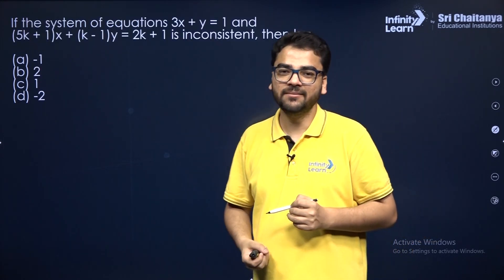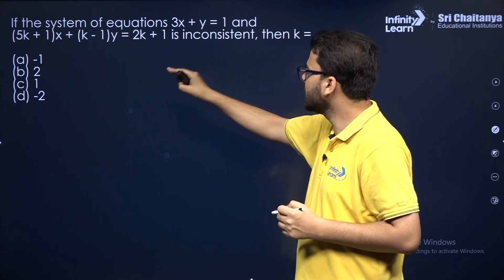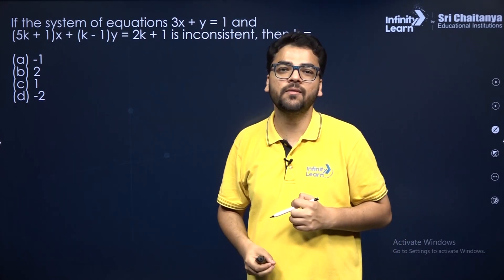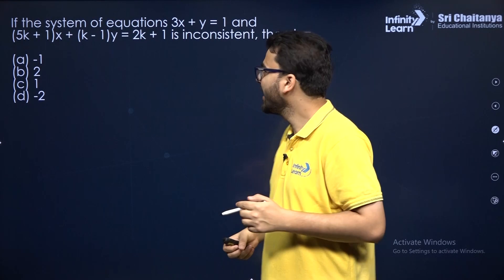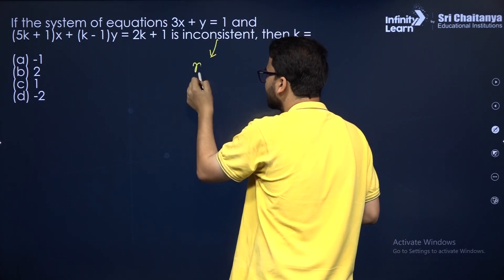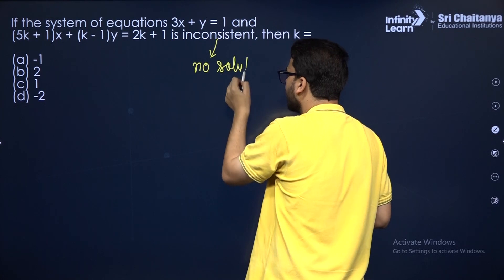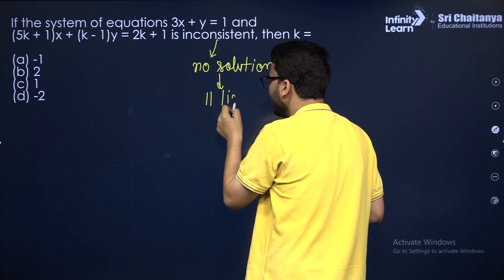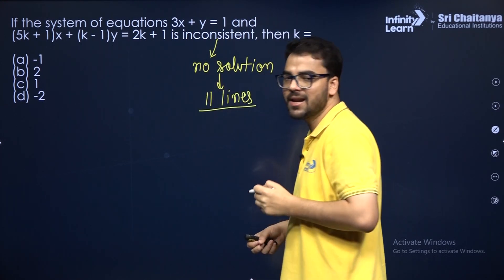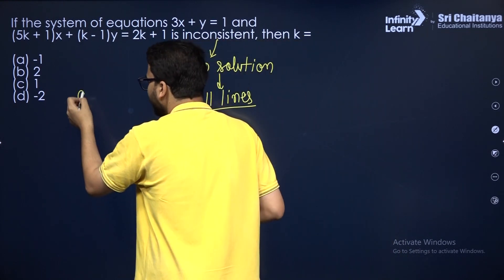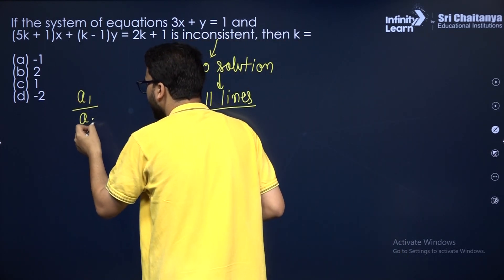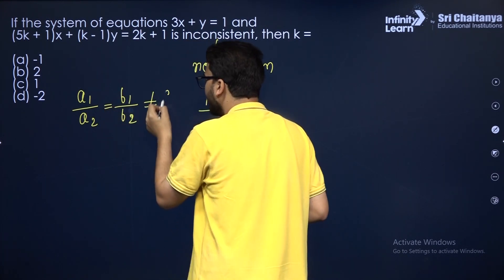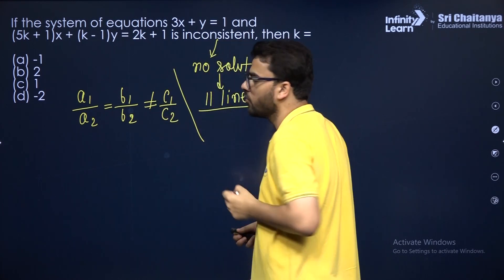Try this one: if this system of equations is inconsistent, what is the value of k? Inconsistent means no solution — or geometrically, the lines are parallel. The condition for parallel lines is A1 by A2 equals B1 by B2, which is not equal to C1 by C2.